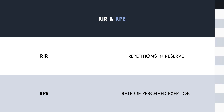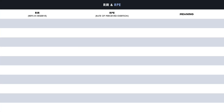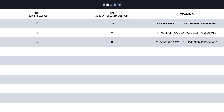The scales work like this: zero reps in reserve, or RPE 10, means the lifter could not perform any more repetitions in that set. This is slightly different from training to true failure — it's essentially stopping just before the trainee thinks they are about to fail. One rep in reserve, or RPE 9, means the lifter thinks they could have performed one more quality rep; two reps in reserve, or RPE 8, means two more reps could have been performed, and so on.